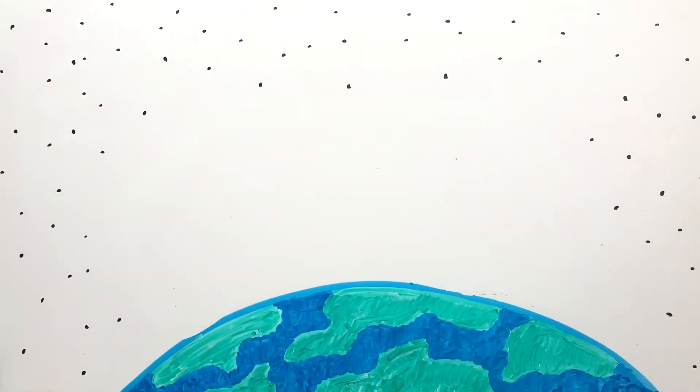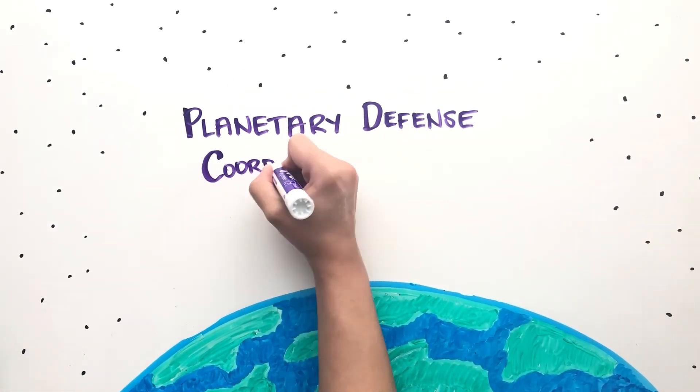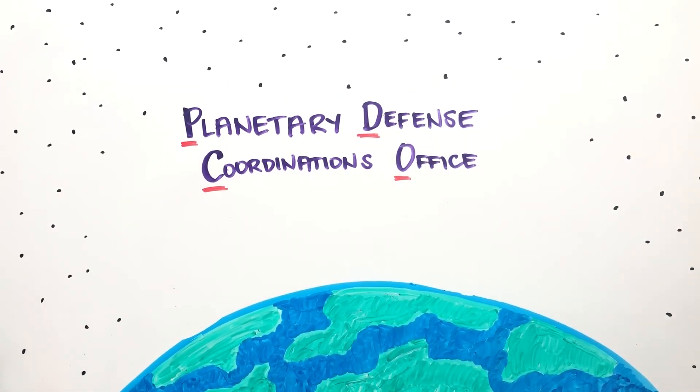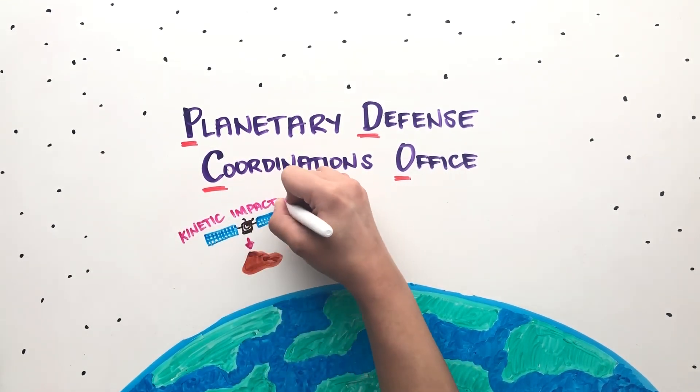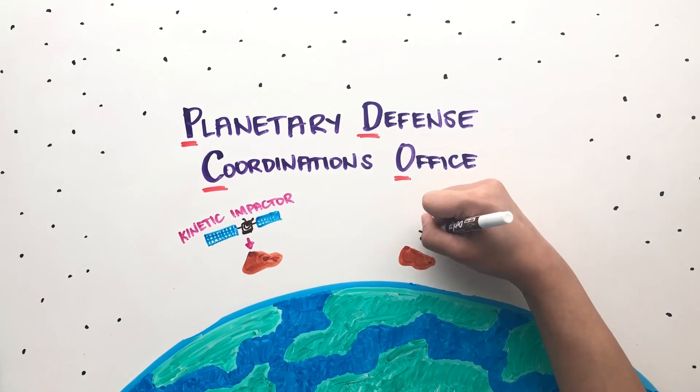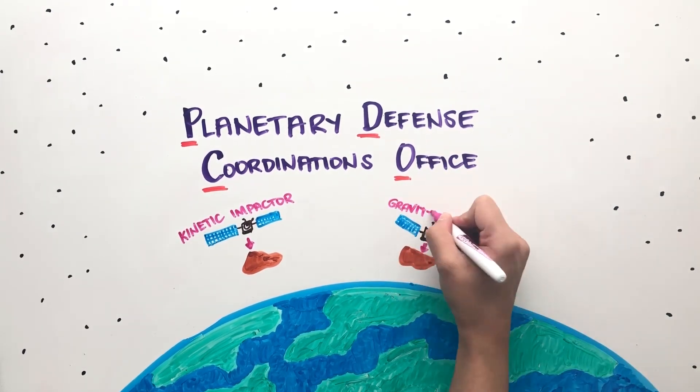To save our planet from an unfortunate event, the Planetary Coordination Office is currently developing technologies that would either move an asteroid's orbit by slamming a spacecraft into an asteroid, or gradually altering its path with its own gravity by using a spacecraft.